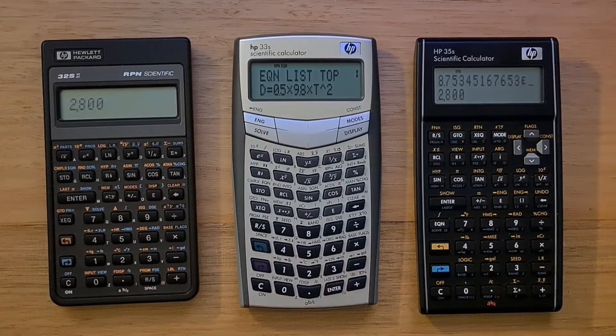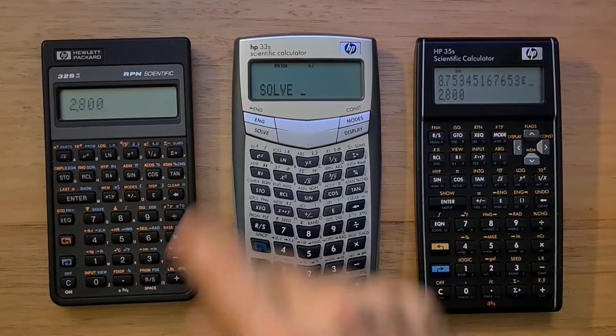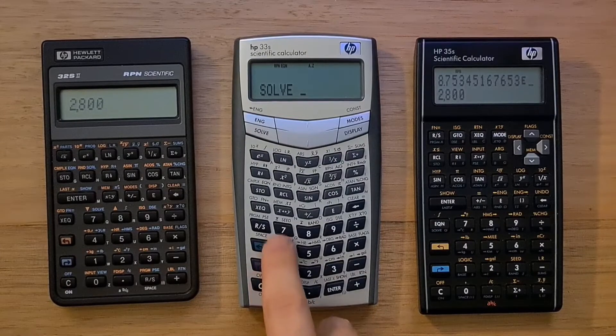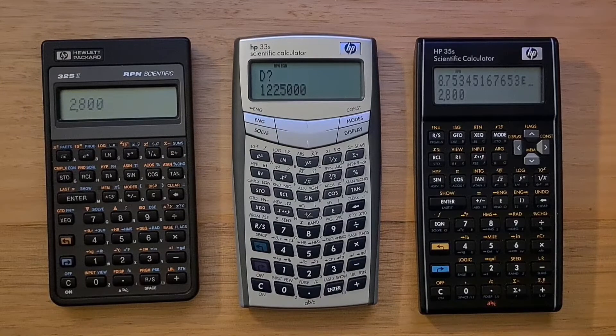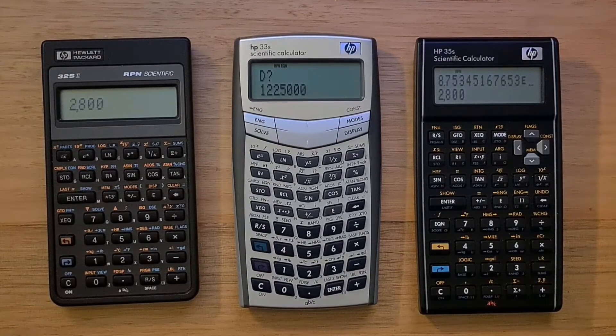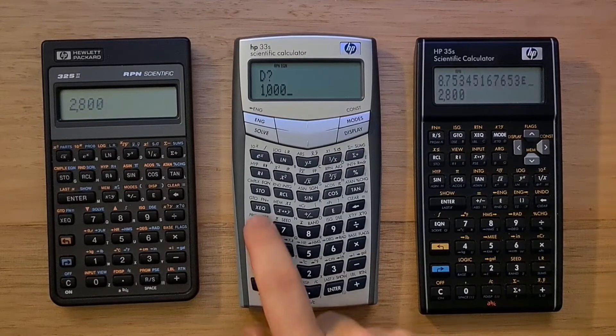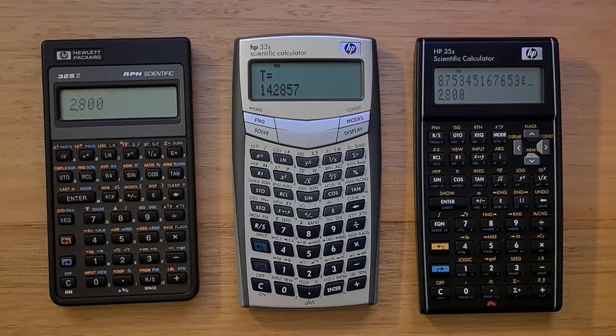We can also solve for any variable using the solve key. Let's solve for t. Now the calculator prompts a value for distance. Let's enter a kilometer. And then the time is 14.28 seconds.